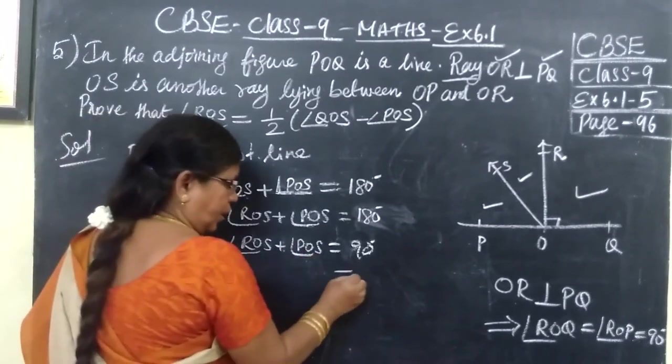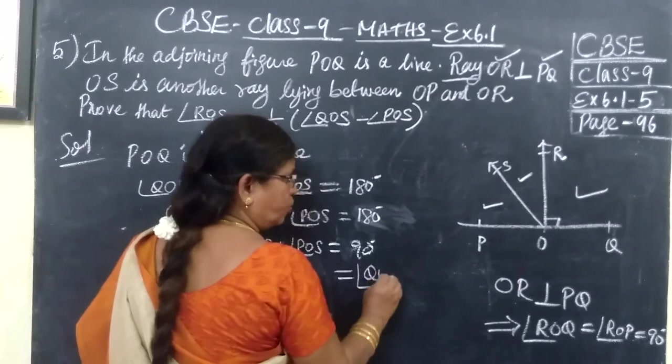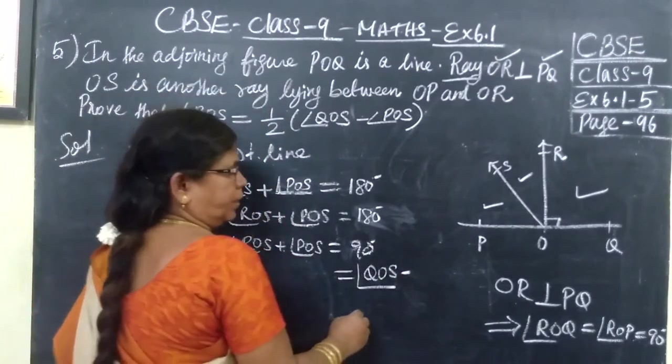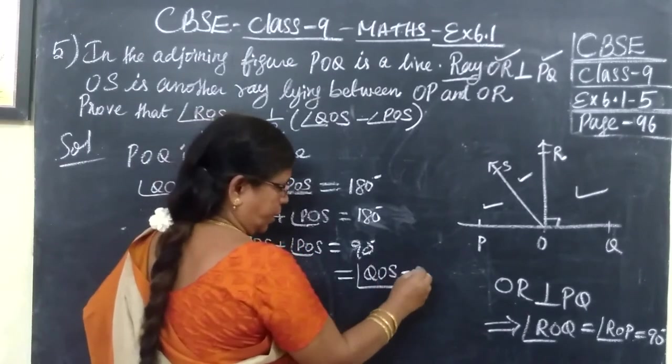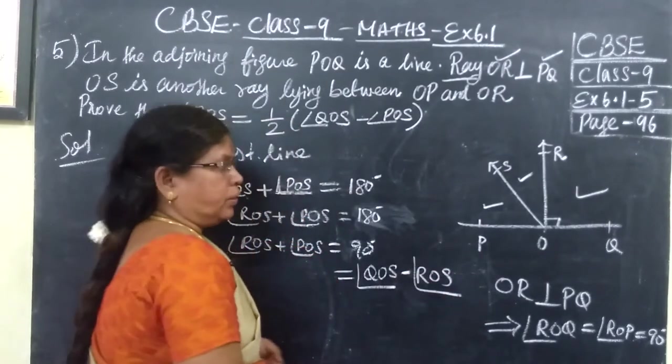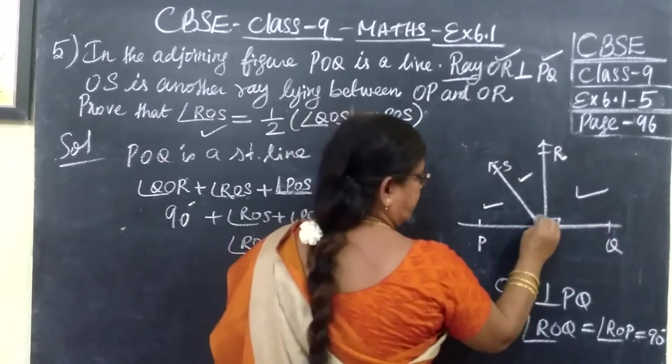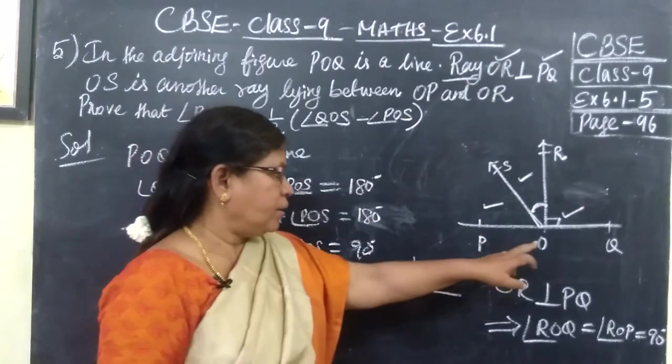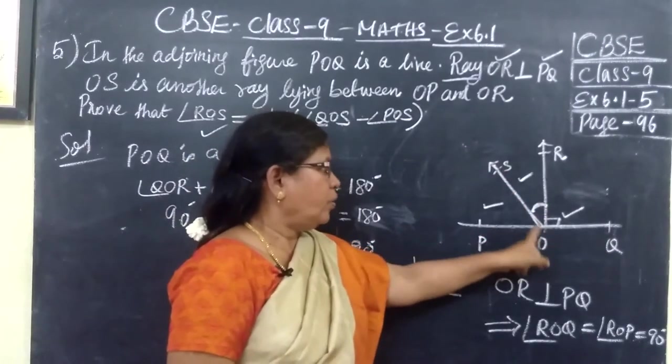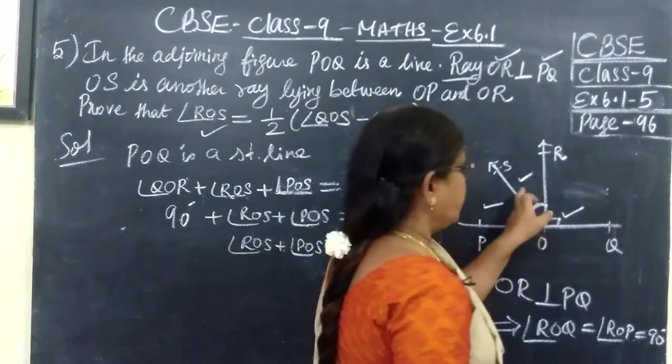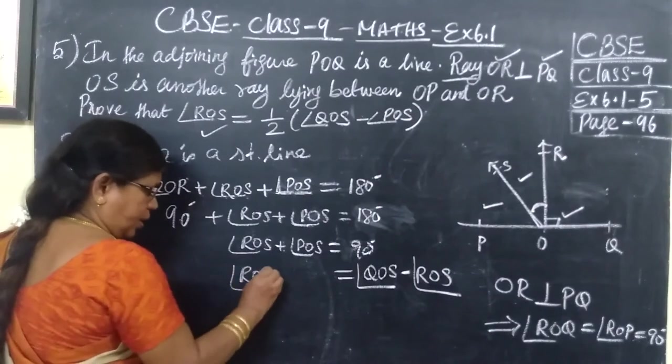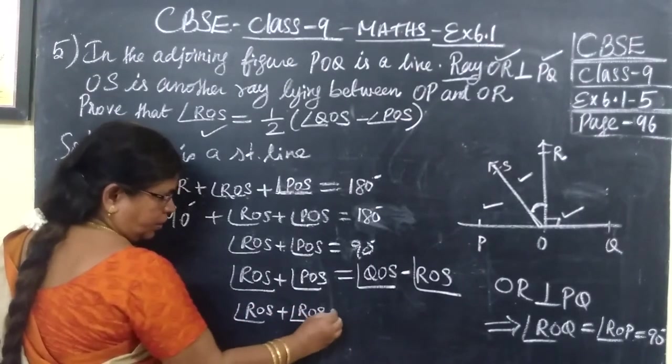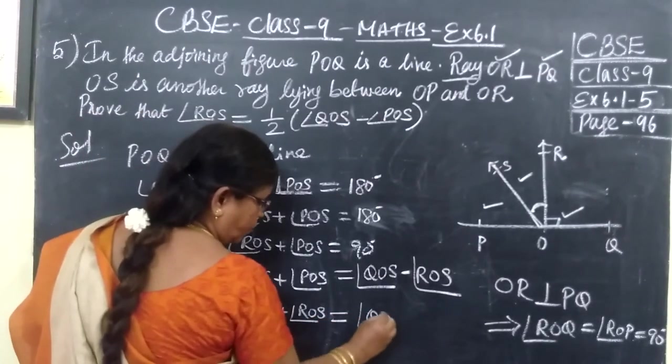You bring 90 to that side. So it is equal to 180 minus 90, which is 90. So instead of 90 you can write angle QOS minus angle ROS. This 90 can be written as angle QOS minus angle ROS. If you separate this full angle QOS minus this angle ROS, you are getting this angle 90 degrees. So you can write ROS plus POS. Bring ROS to this side.